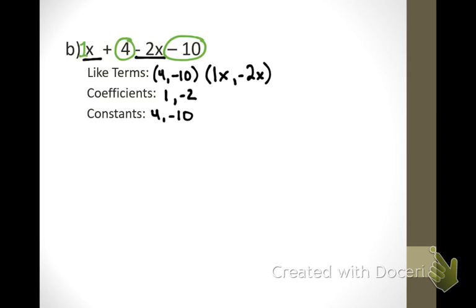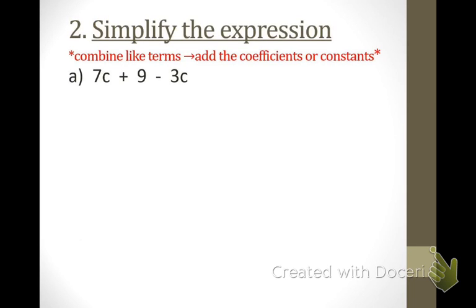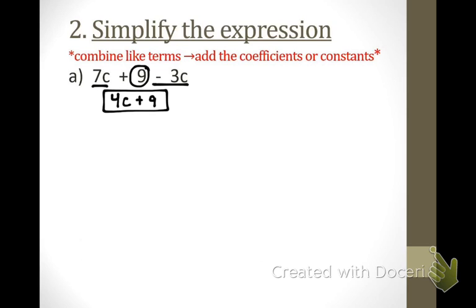Now a different kind of example — example number two asks us to simplify the expression. That doesn't mean solve it, it means simplify it. Combine like terms and then add the coefficients or the constants. We have 7c and negative 3c as like terms, and 9 is by itself. What would 7c minus 3c be? 4c. So we bring down 4c plus 9. I cannot add 9 to 4c because they're not like terms — 9 is a constant and 4c is a variable term. That is our simplified answer.